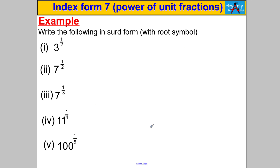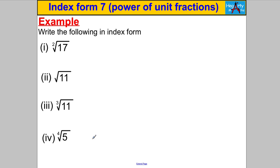Pause the video and try to write the following with a square root or cube root sign. Three to the half just means root three — leave it like that since it's not a whole number. Seven to the half means root seven. Seven to the third means cube root seven. Eleven to the quarter means the fourth root of eleven. One hundred to the fifth means the fifth root of one hundred. We always leave answers in root form when the result is not a whole number. Now write the following in index form: the square root of 17 is 17 to the power of a half, and the cube root of 11 is 11 to the third, and the fourth root of 5 is 5 to the quarter.